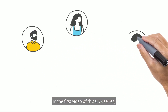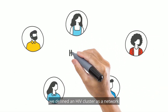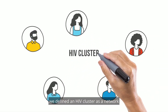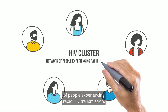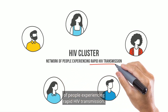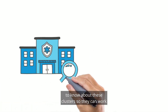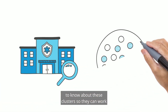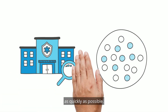In the first video of this CDR series, we defined an HIV cluster as a network of people experiencing rapid HIV transmission. We noted that health departments need to know about these clusters so they can work to stop this rapid HIV transmission in communities as quickly as possible.